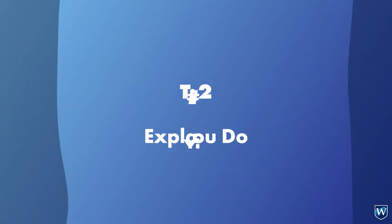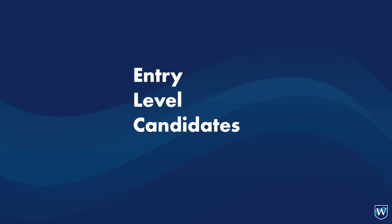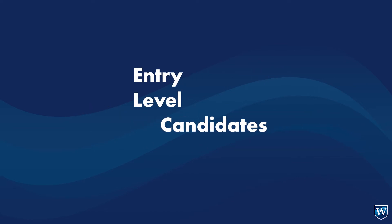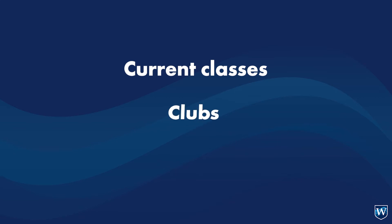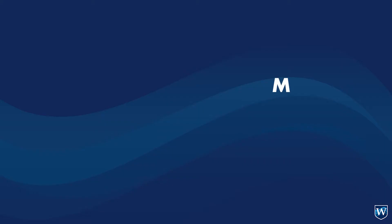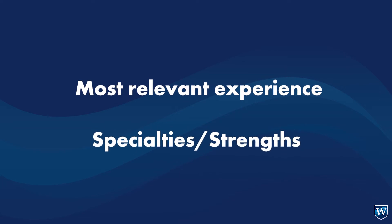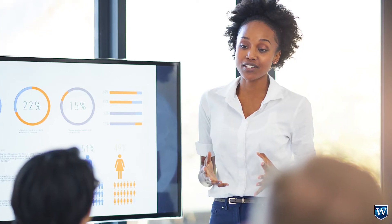When explaining what you do, give a brief summary of your background. For entry-level or bachelor's students, you can discuss your most current classes, clubs, sports, internships, or volunteer experiences. For mid or senior level candidates, focus on your most relevant work experience, key specialties or strengths relevant to your target audience, and distinct KPI successes.